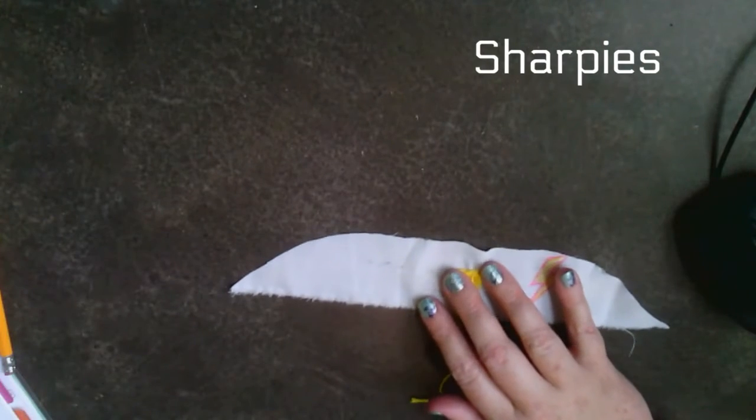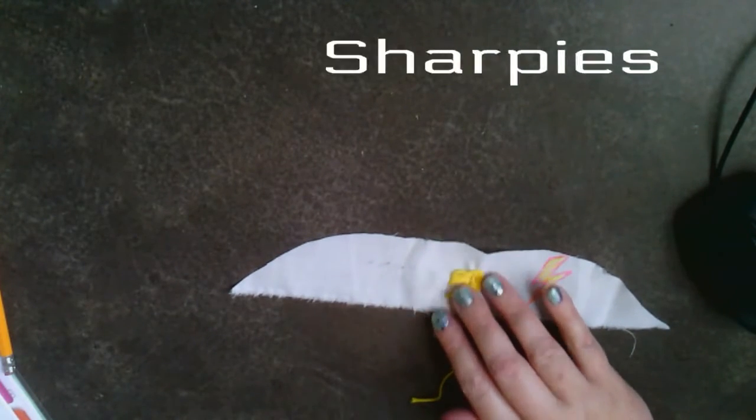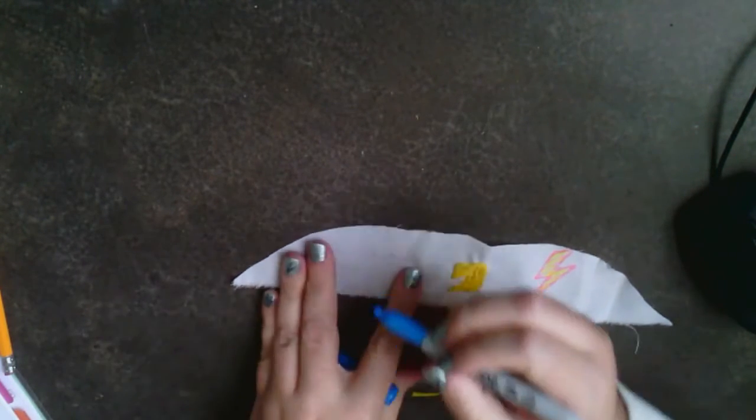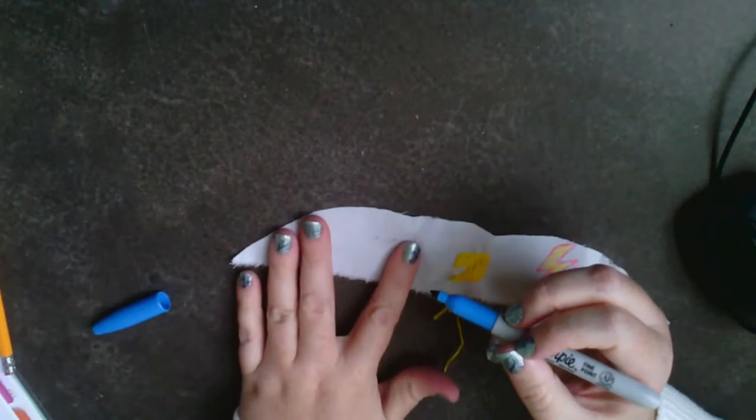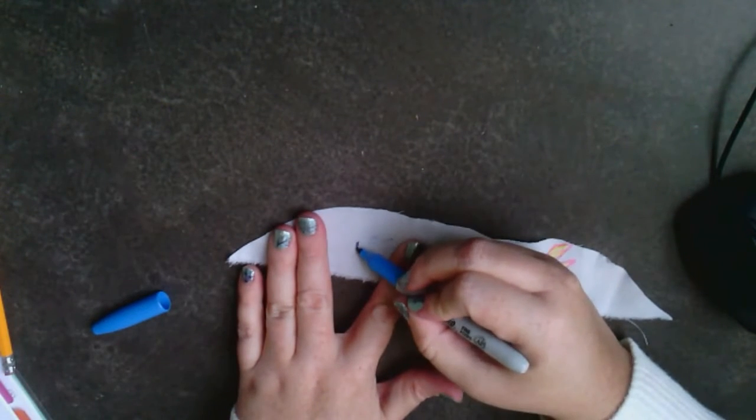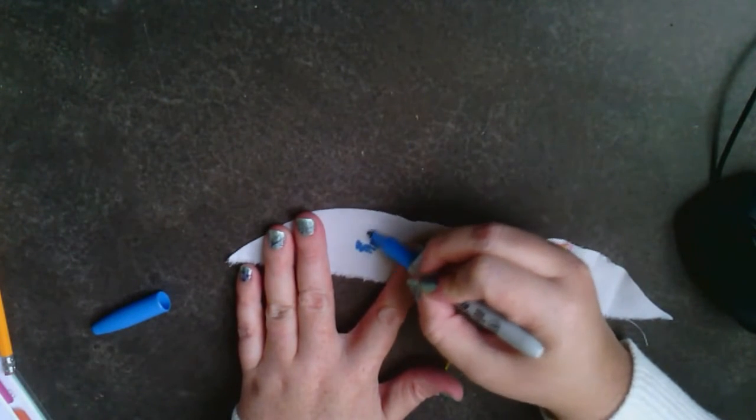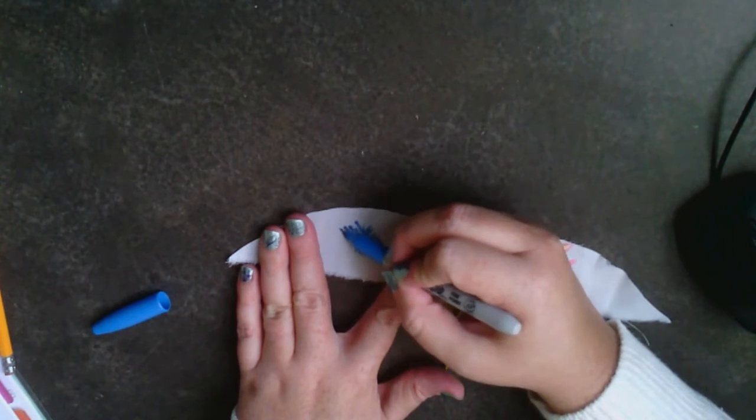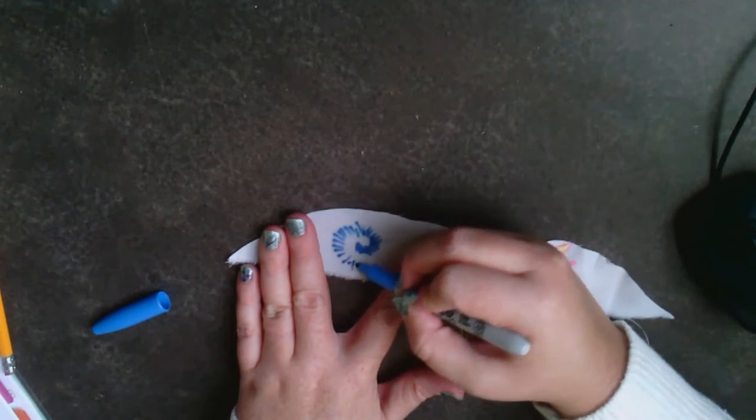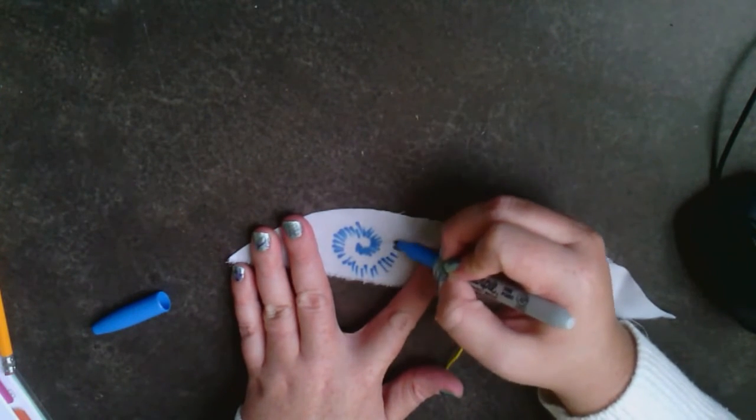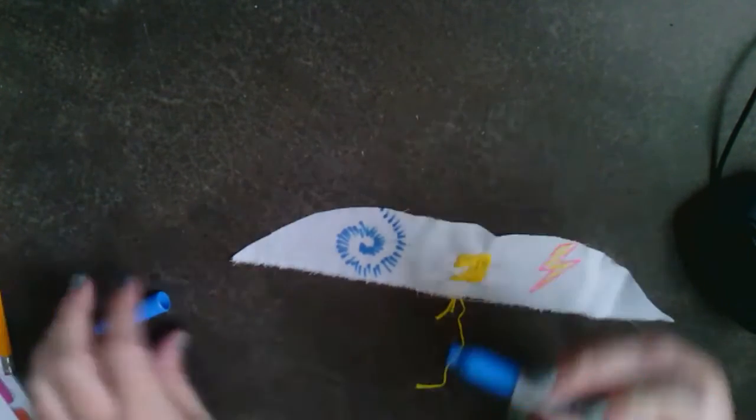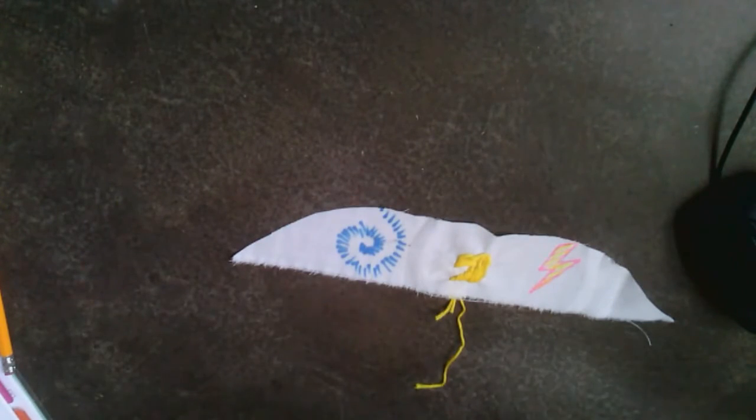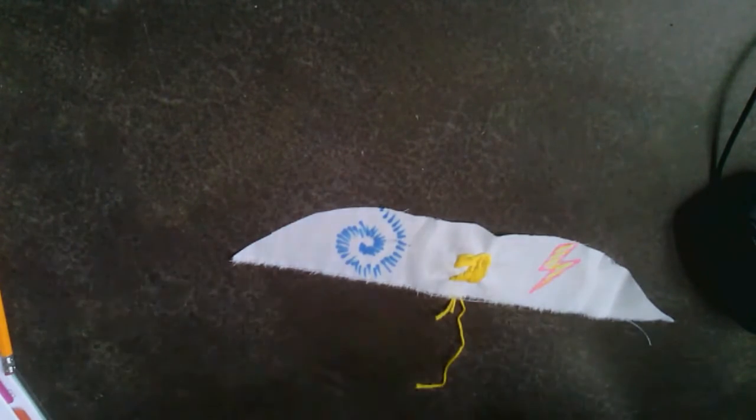All right. Now for Sharpie, if you want to get a kind of tie-dye effect, again, pull your fabric tight. You could do whatever kind of drawing pattern you want. Just kind of going for this little effect.